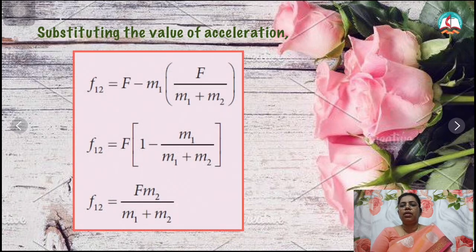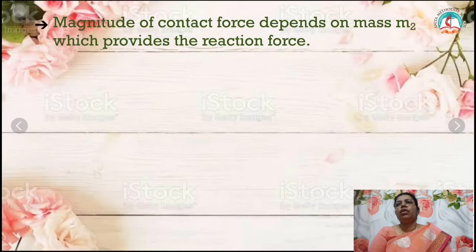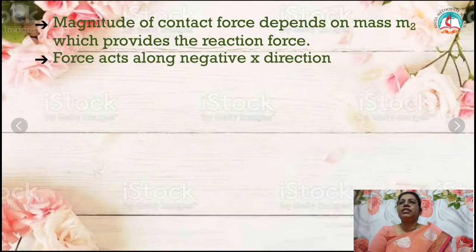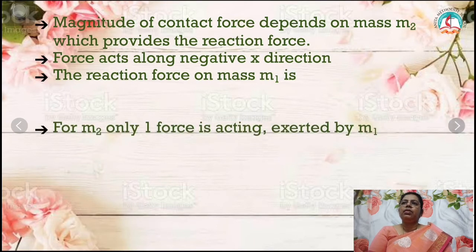Substituting the value of acceleration A equals F divided by (M1 plus M2): F12 equals F minus M1 into F divided by (M1 plus M2). Taking F outside: F12 equals F into (1 minus M1 divided by (M1 plus M2)). This simplifies to F12 equals F times M2 divided by (M1 plus M2). The magnitude of the contact force depends on M2, which provides the reaction force, acting along the negative x direction.